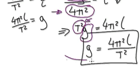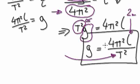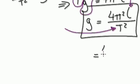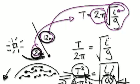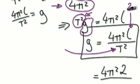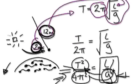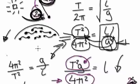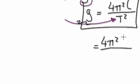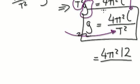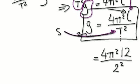The length of the string is 12 meters and the time is 2 seconds — I made a mistake earlier, sorry. So the length of the string is 12 meters, putting 12 into L, and T equals 2, putting 2 into T.